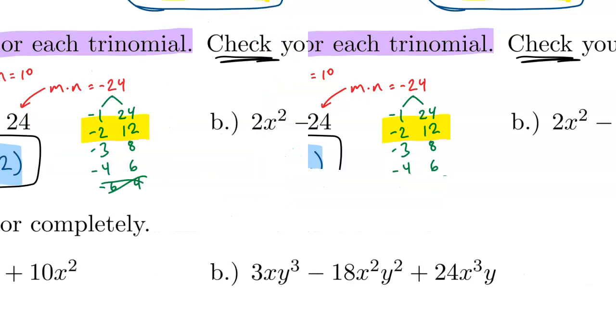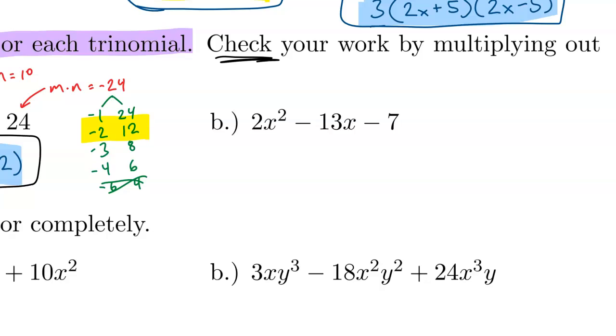Our second factoring problem is a bit more complicated, because the coefficient in front of x squared is something other than 1. So we have two possible approaches we can take. We can use guessing and checking. If I set up the structure for factoring this into a pair of binomials, the numbers in front of the x have to multiply to equal 2. So there's really only one option: I can have 2 times 1.